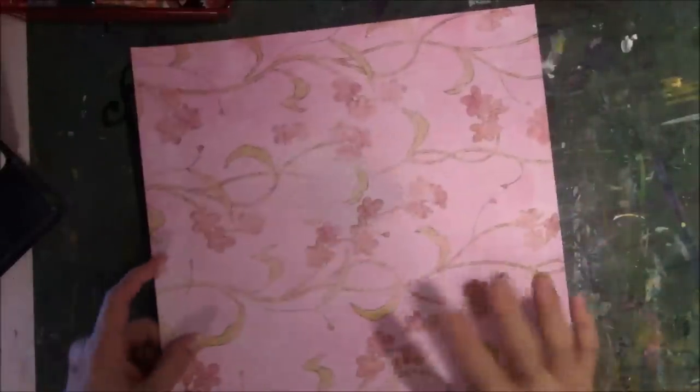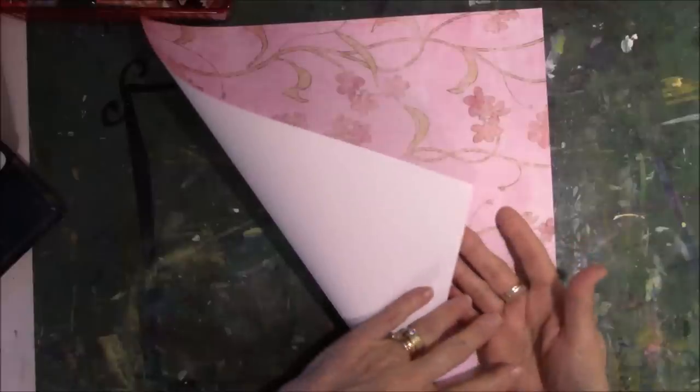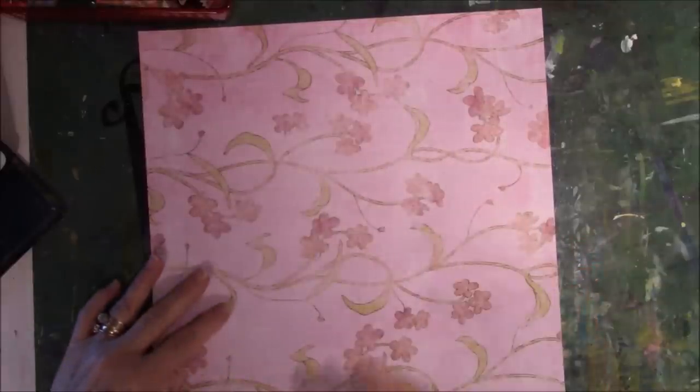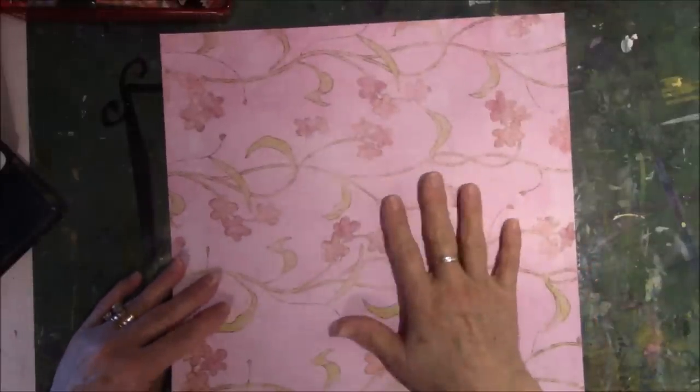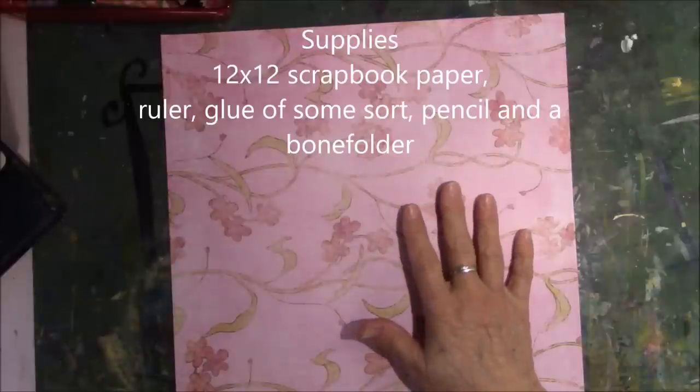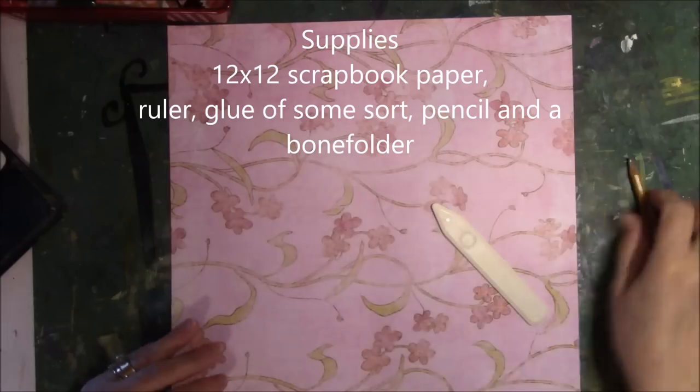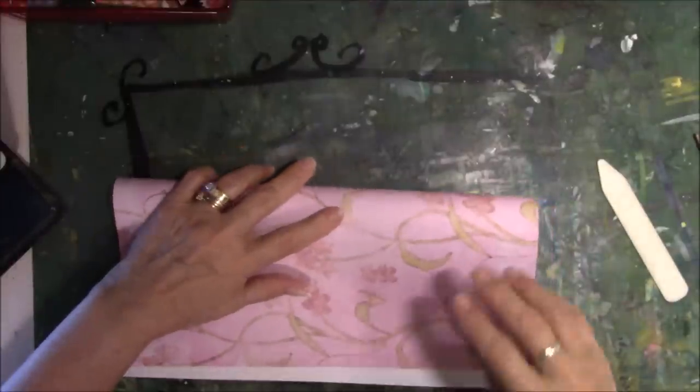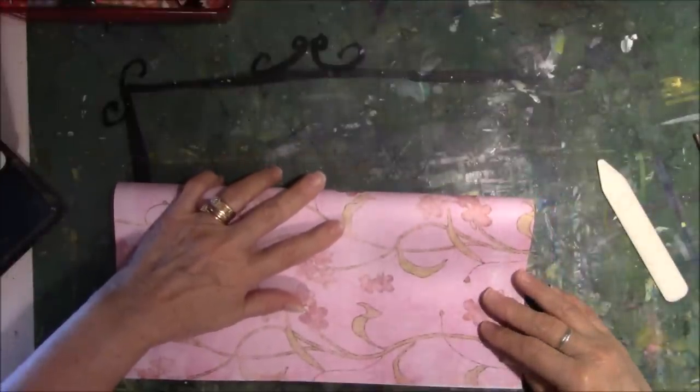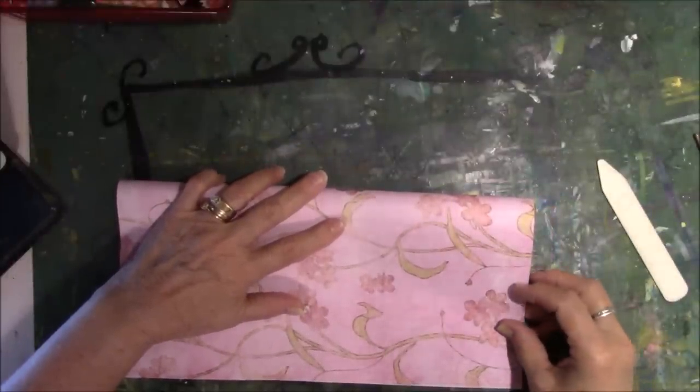Here is the 12x12 paper. It is colored on one side and white on the other, so you'll be able to tell distinctly what the difference is. You're going to need this, a glue stick, and a bone folder, and a pencil.